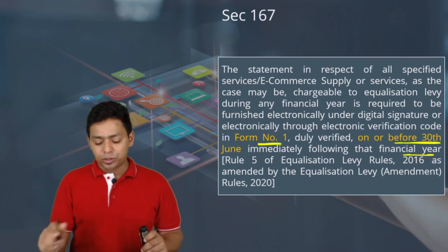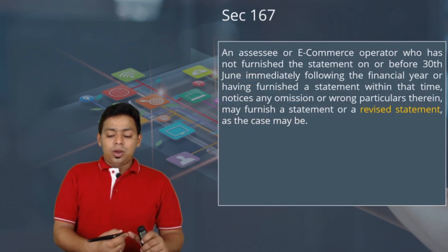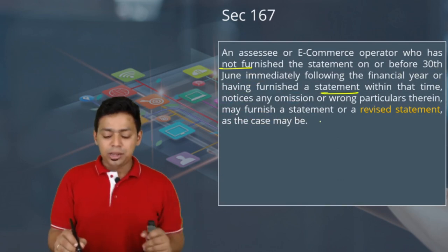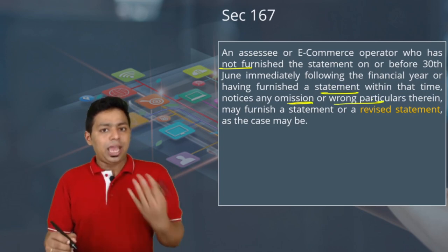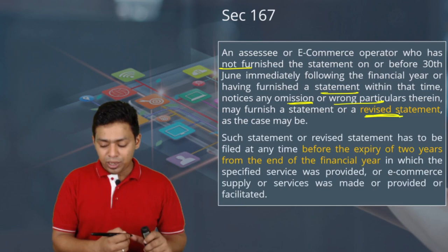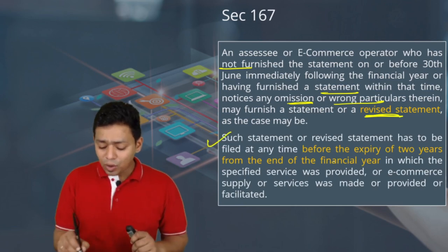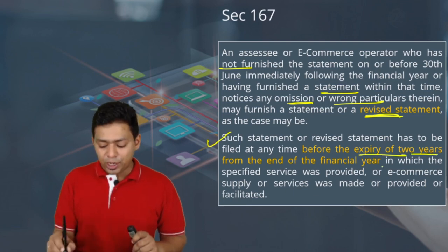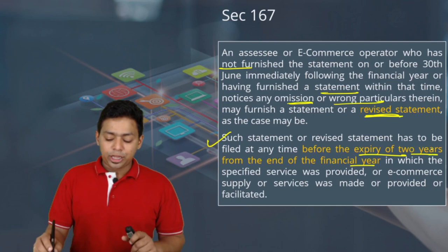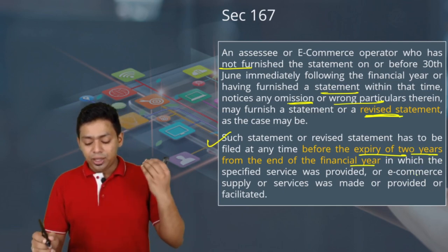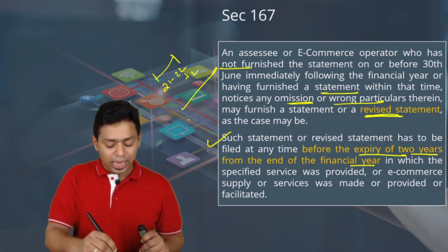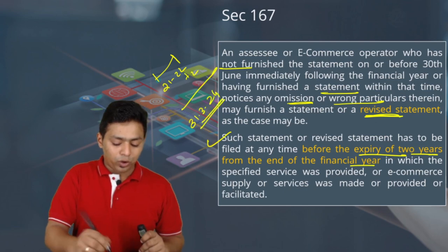An assessee or e-commerce operator who has not furnished the statement by 30th June, or who notices omissions or wrong particulars after furnishing, can file a revised statement. Such a revised statement can be filed at any time before the expiry of two years from the end of the financial year in which the specified service was provided or e-commerce supply was made. For example, if services were provided in FY 2021-22, you can revise before 31st March 2024.